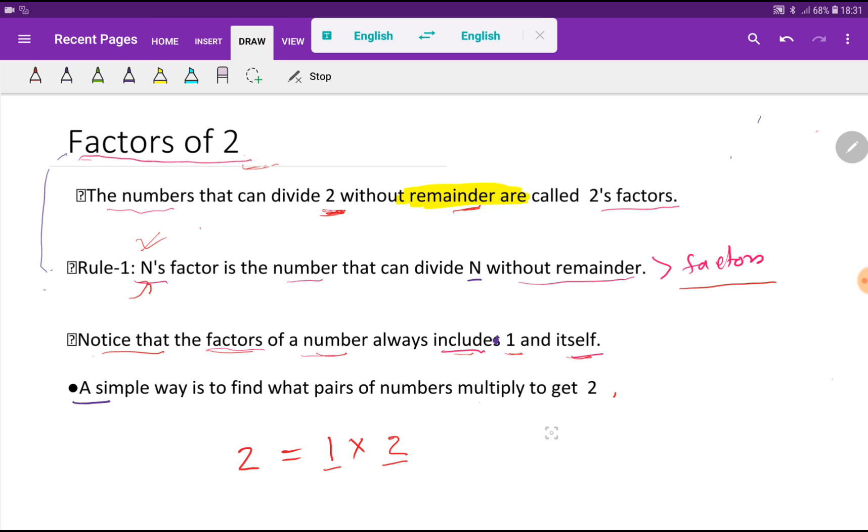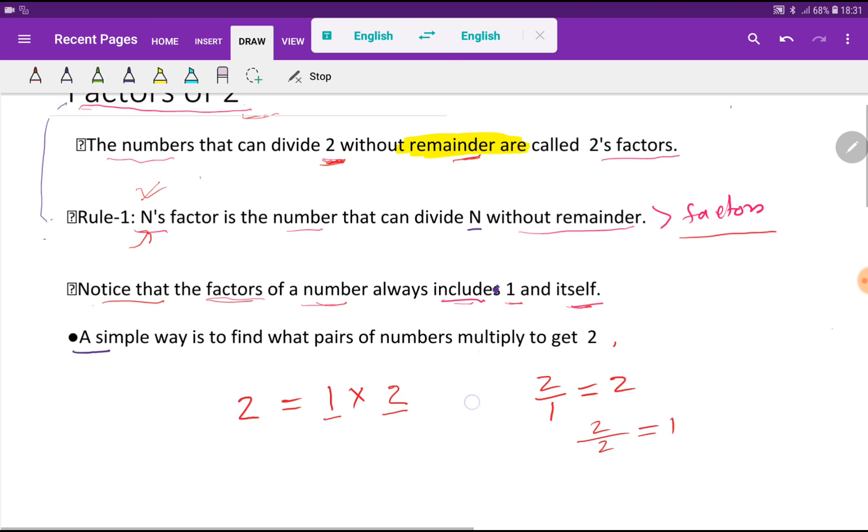Look, if I divide this two by one, then I will get two. And if I divide two by two, I will get one.